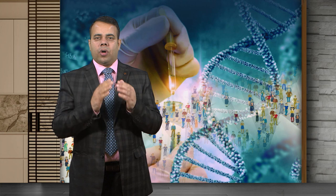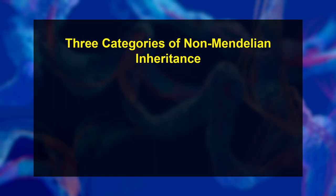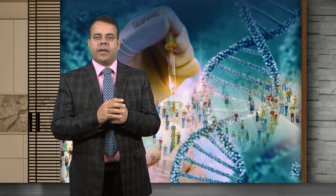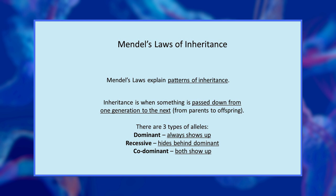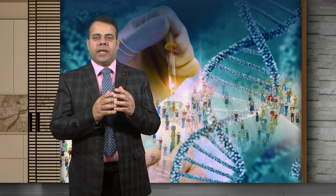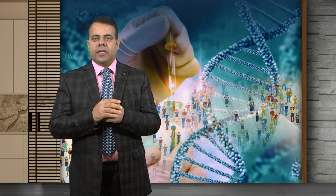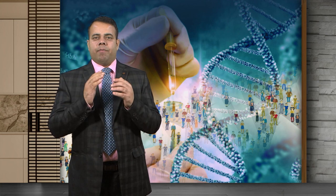Characters showing non-Mendelian inheritance may be grouped under three broad categories: first, those related to cellular structures and patterns; second, those produced by intracellular parasites, that is symbionts and viruses; and third, those associated with DNA-containing cell organelles like mitochondria and chloroplasts. In addition, some characters exhibit a Mendelian inheritance pattern, but the development of these characters is markedly affected by the genotype of the maternal parent of the concerned individual. Such cases are classified as maternal effects.